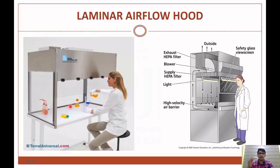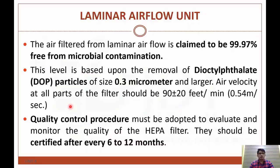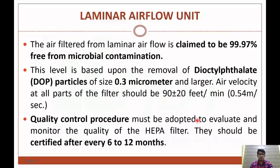Contaminating micro-organisms will be removed by the laminar air flow unit, and it is claimed to be 99.97% free from microbial contamination. This level is based upon the removal of di-octyl phthalate particles with a particle size of 0.3 micrometer and larger. The air velocity at all parts of the filter should be 90 plus or minus 20 feet per minute. The quality control procedure must be adopted to evaluate and monitor the quality of the HEPA filter, and it should be certified after 6 to 12 months of installation.